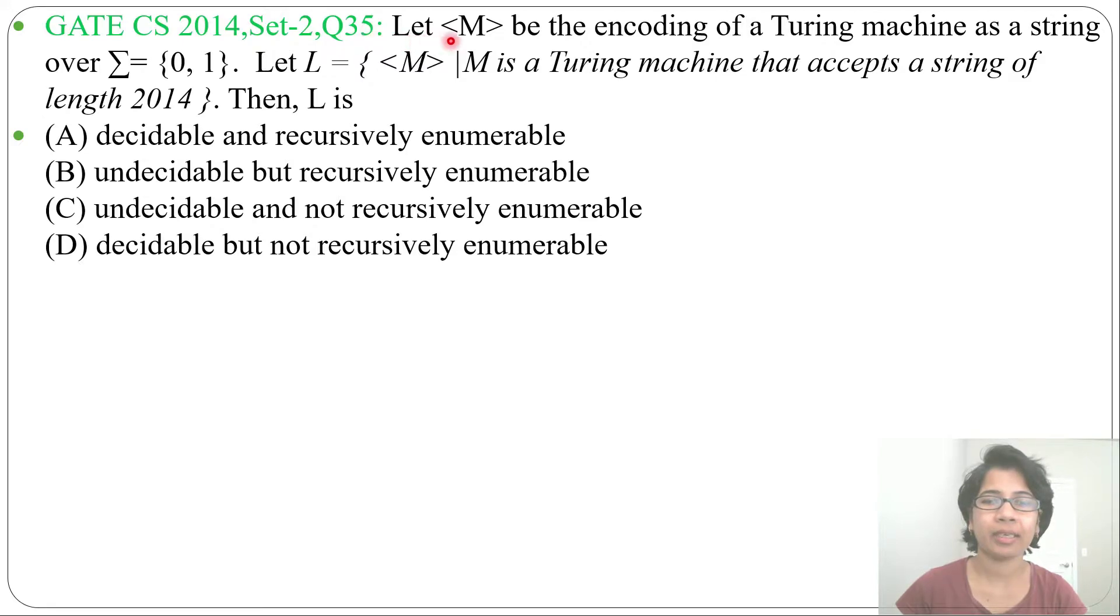Let's read the question. Let M be the encoding of a Turing machine as a string over alphabet {0,1}. Let L = {<M> | M is a Turing machine that accepts a string of length 2014}. Then L is option A: